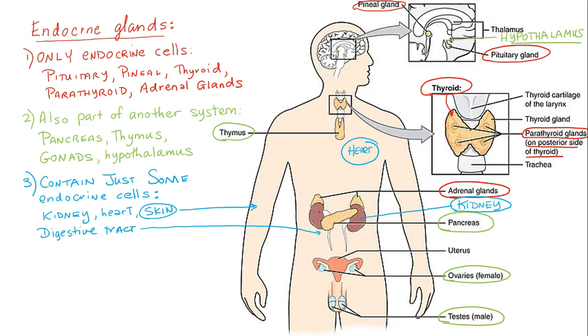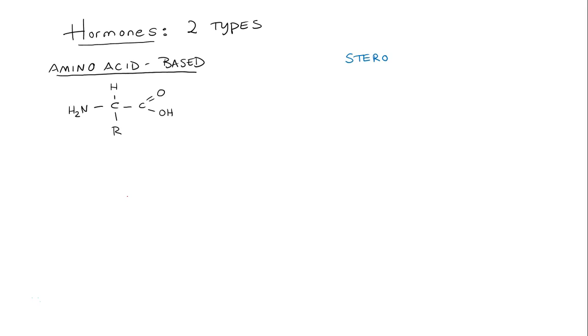So all of these endocrine glands secrete two types of hormones. One type is called the amino acid based hormone. And here's a picture of an amino acid as a polar molecule. And the other type of hormone is the steroid hormone, which are derivatives of cholesterol. And these are nonpolar lipids.